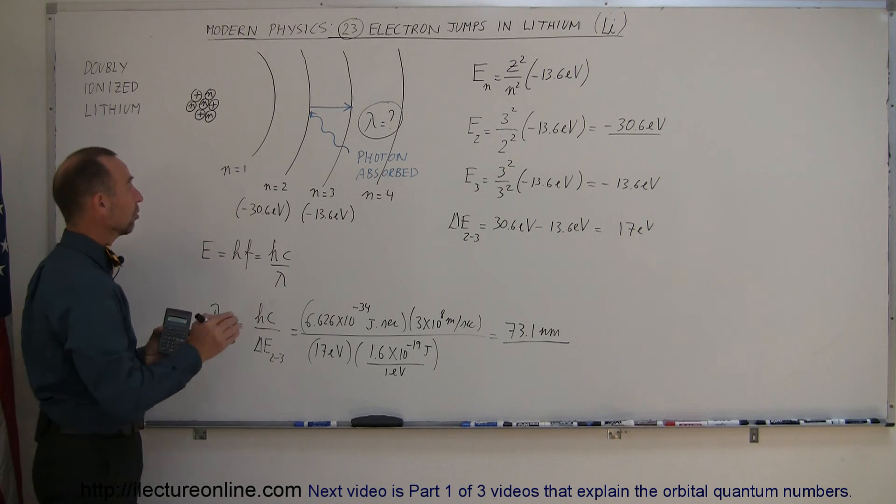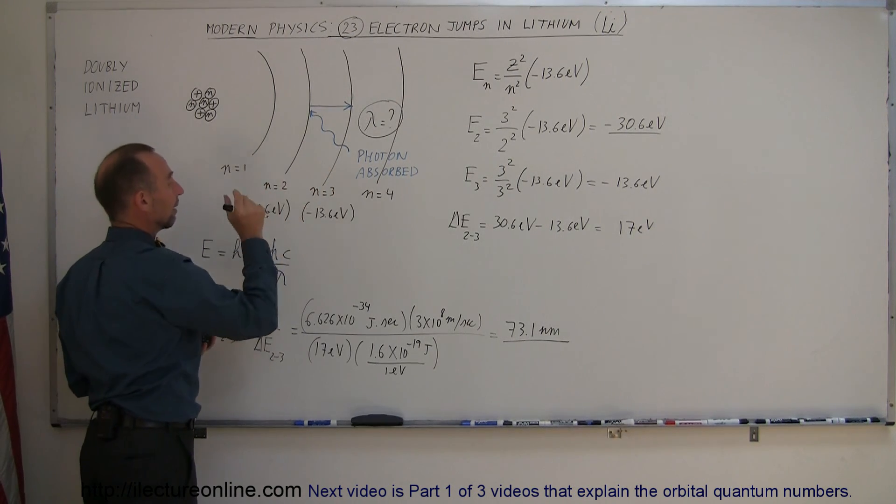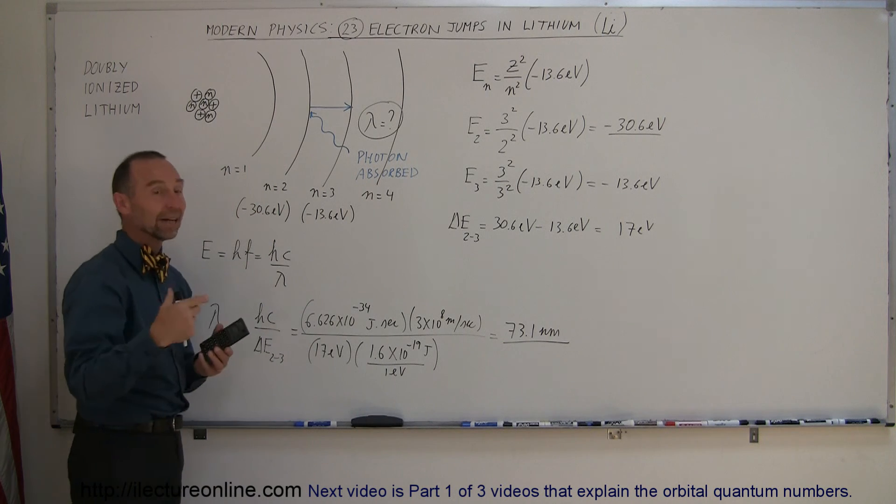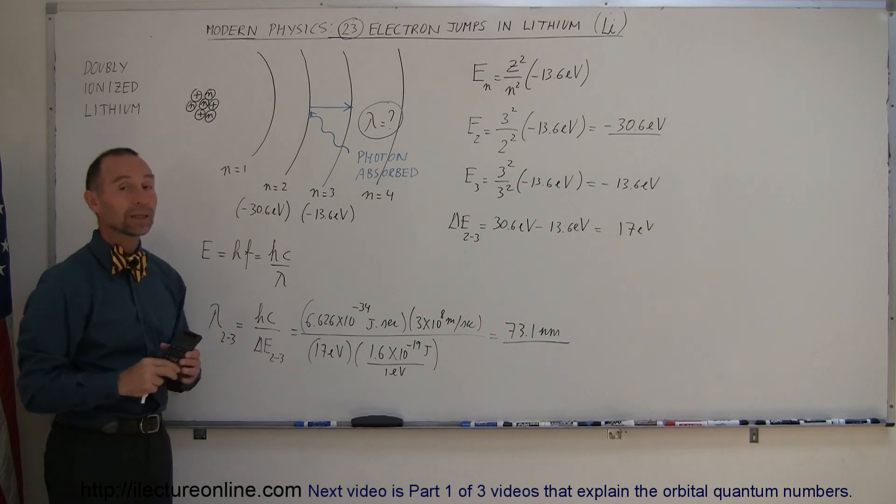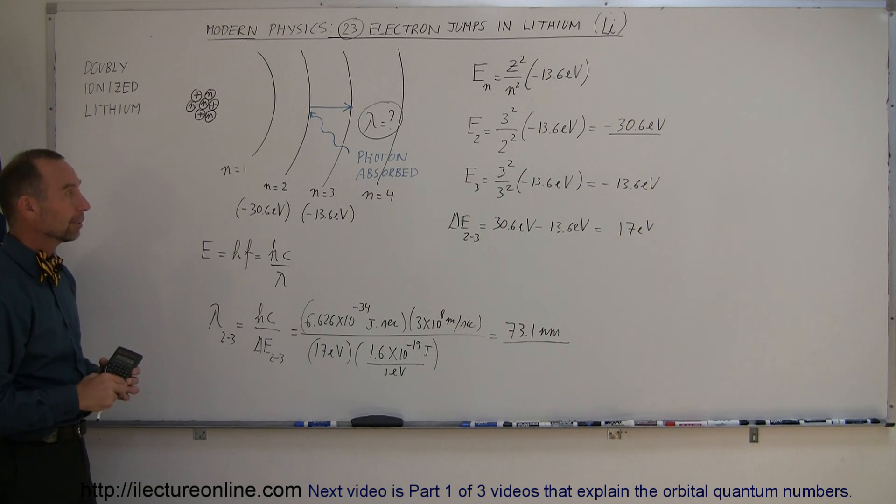For an electron to be jumping from the second to third level, we need to have a photon of this exact wavelength for it to provide the energy required to make that electron jump. And that's how we deal with electron jumps in more complicated atoms.